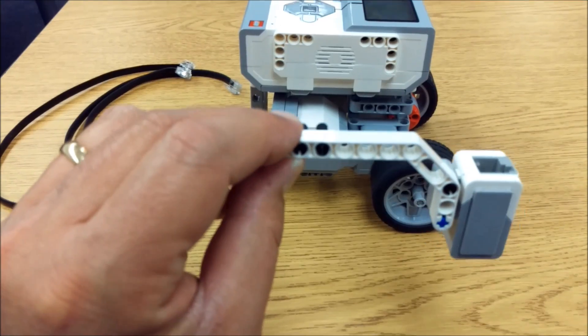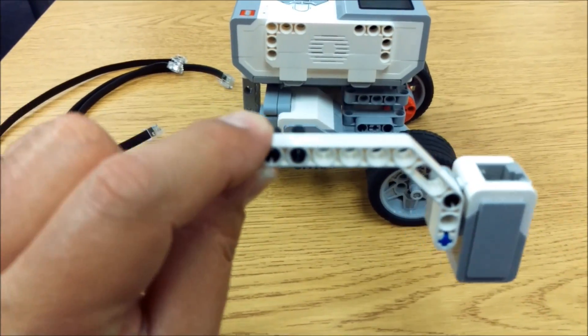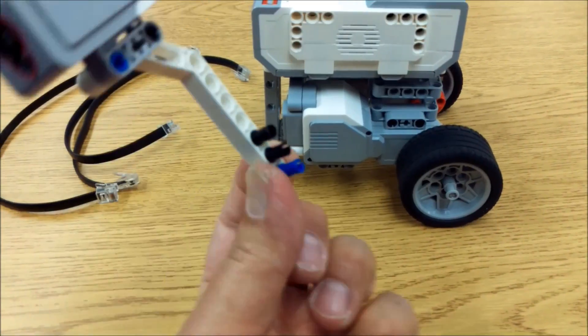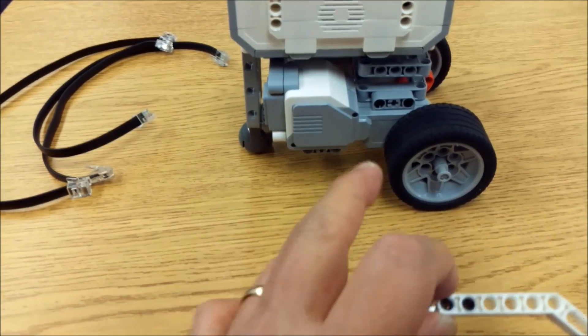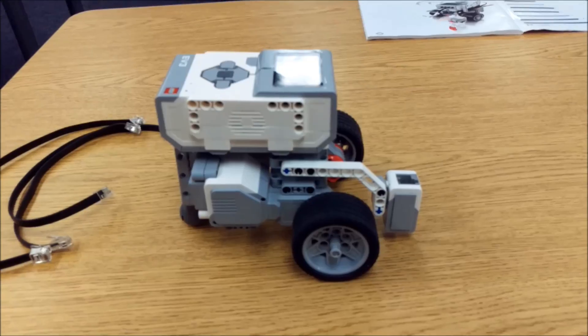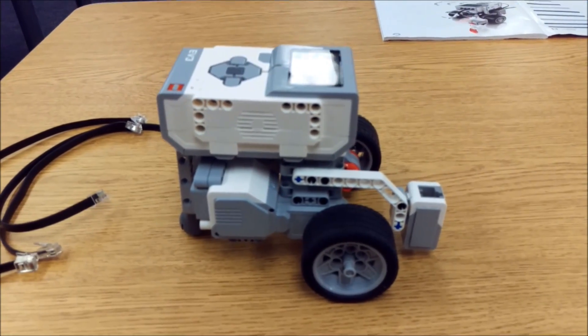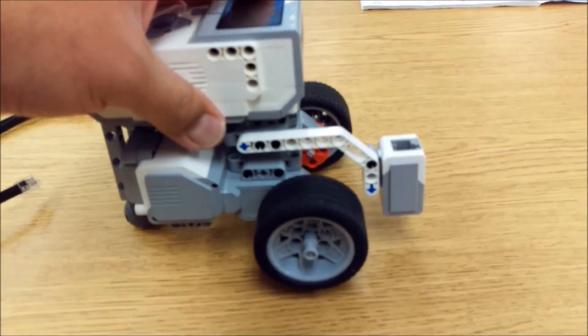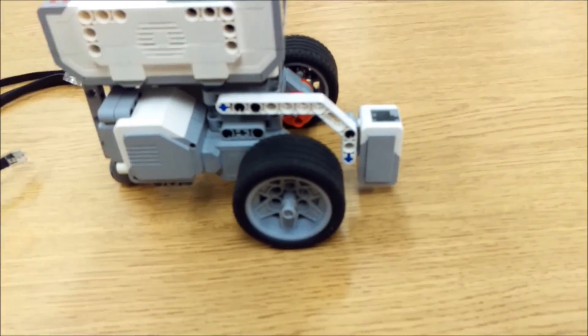I am ready now to attach this white arm piece. I'm going to connect these three connector pieces to the three holes right here. So it'll look like so. And that color sensor is at the perfect height.